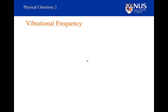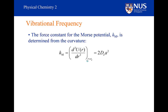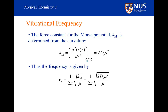Let's have a look at the vibrational frequency. We can determine a force constant for the Morse potential simply by taking the second-order differential of our function. If you differentiate it twice and evaluate at R equals R sub E, you obtain the force constant, which we can substitute into our expression for vibrational frequency.